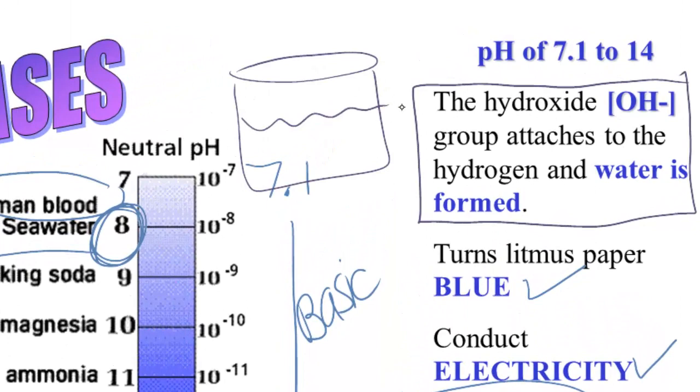So if I took a common base, like NaOH, sodium hydroxide, and I dropped it into water, as soon as it hit the water, it would separate just like the acid would. It will dissociate into sodium, which is a metal, and hydroxide.